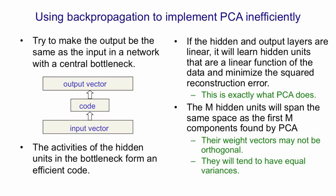It's just if we use stochastic gradient descent learning for this network, it will typically be much less efficient than the algorithm used for principal components. Although if there's a huge amount of data, it might actually be more efficient.